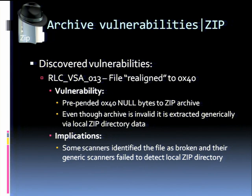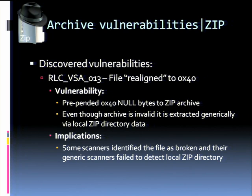The next vulnerability involves realigning the file to 40 hex bytes — 'realigned' is quoted because we didn't really realign anything, we just prepended bytes. This breaks the archive, but since the zip file format has both central and local directories, the data can still be extracted generically. WinRAR was the only tool able to do this, and since it's still extractable by at least one tool, antivirus vendors want to support that case as well.